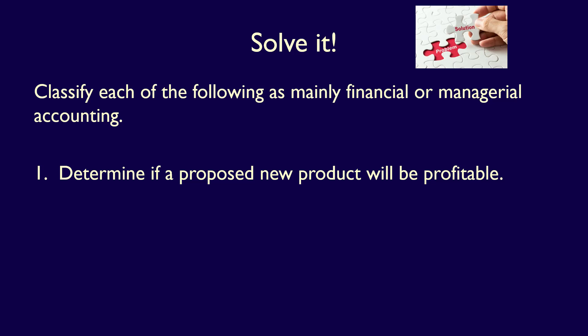Number one: Determine if the proposed new product will be profitable. The wording in the question is giving you the answer. Notice it says 'new product,' referring to the future, and 'will be,' again referencing the future. Both indicate predicting the future, which is all about Managerial Accounting, because internal users would need this information to decide whether to produce a product or not.